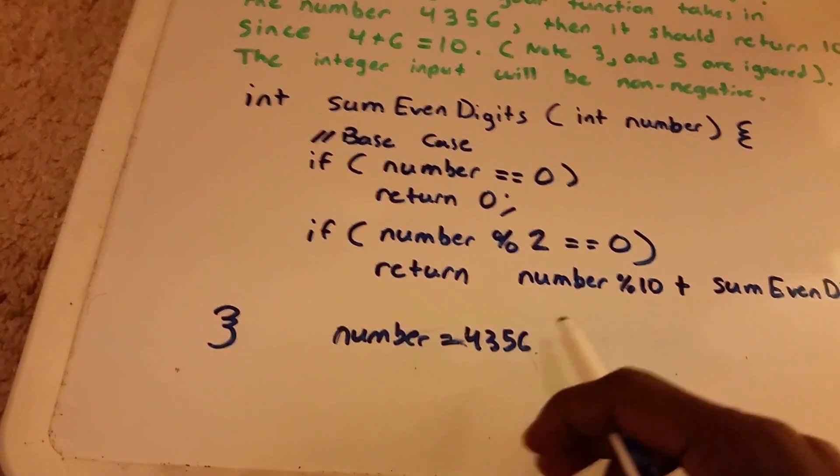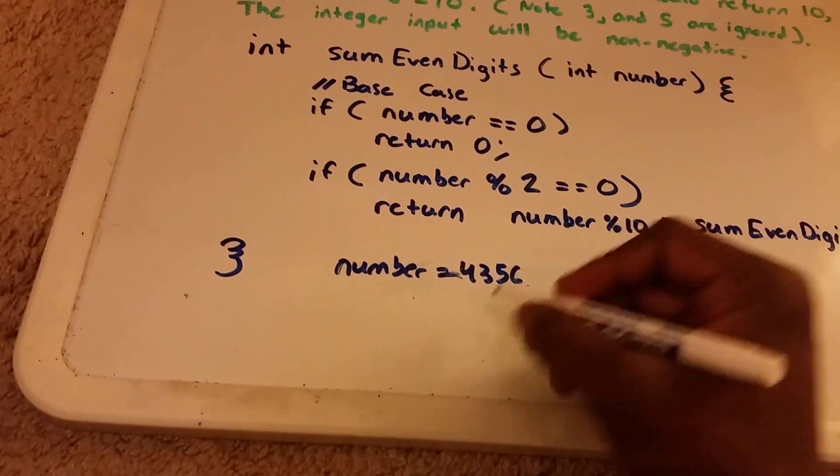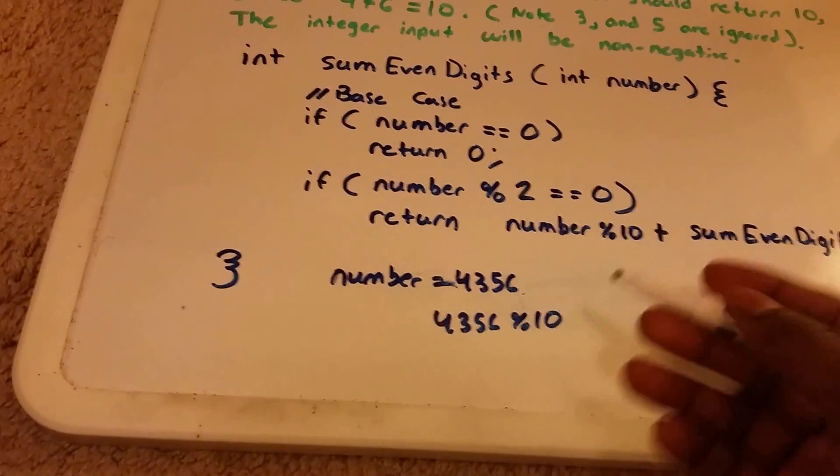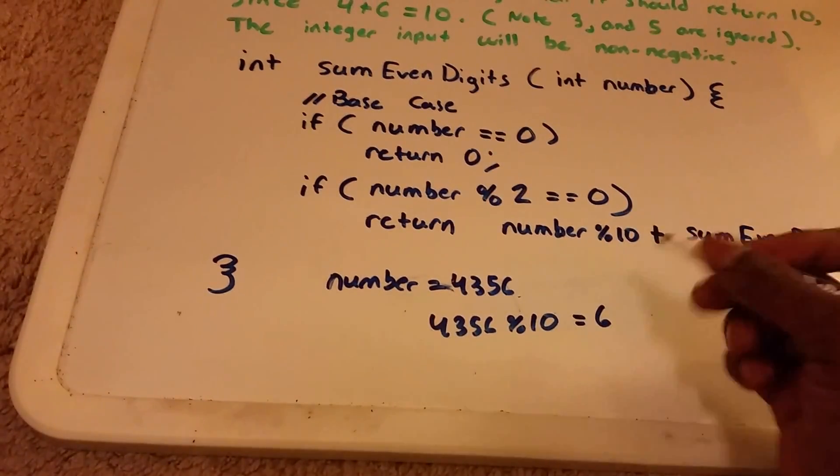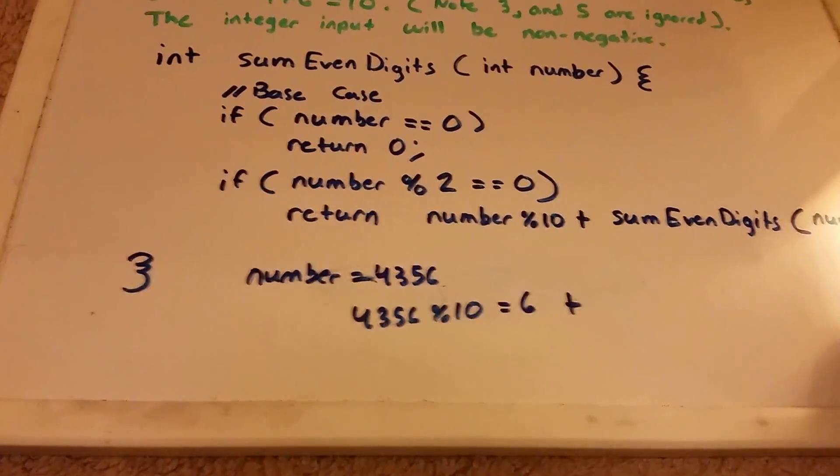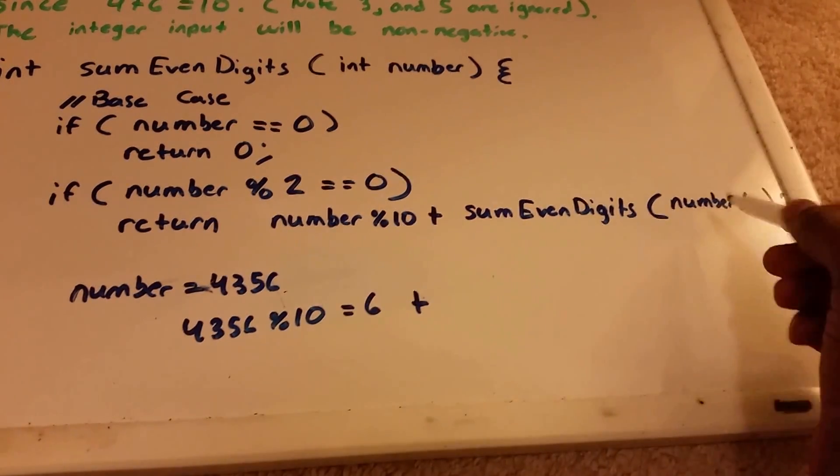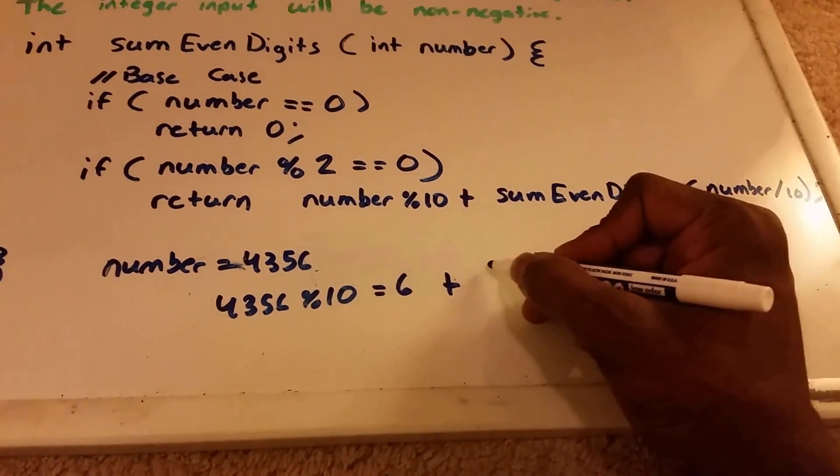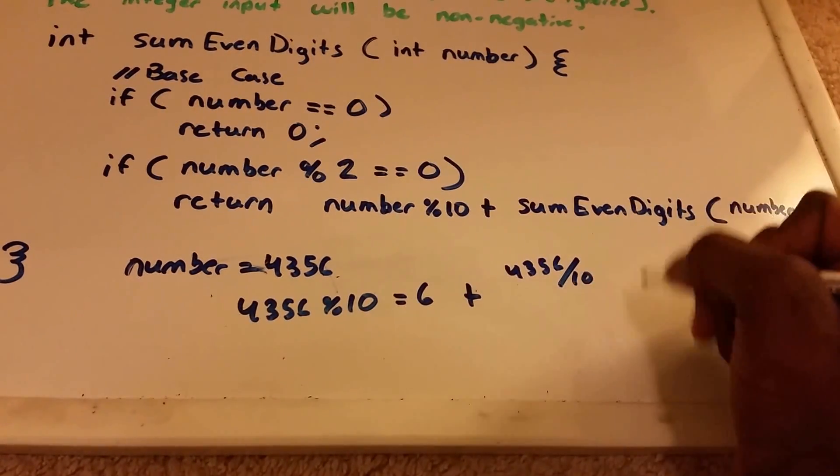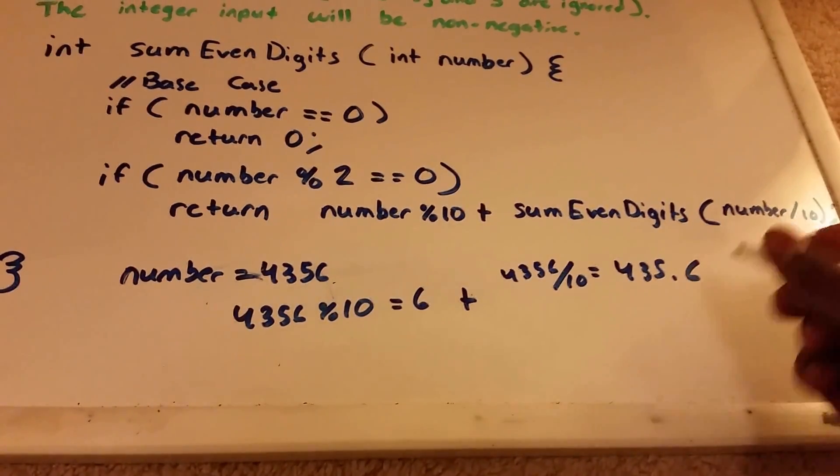Number equals 4356. What we're returning so far is we're returning 4356 mod 10, which is equal to 6. So that's 6 plus whatever we're inputting here, which we're iterating through number. So number divided by 10, that's going to be 4356 divided by 10, and what does that equal? It's 435.6, right?